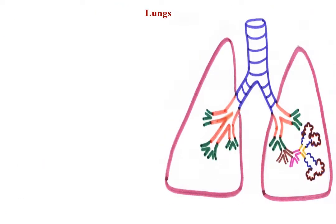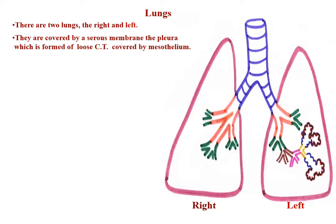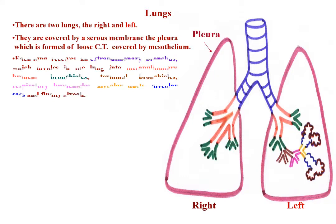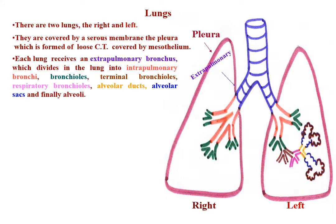The lungs are the principal respiratory organs. There are two lungs, the right and left. They are covered by a serous membrane called the pleura, which is formed of loose connective tissue covered by mesothelium. Each lung receives an extrapulmonary bronchus, which divides in the lung into intrapulmonary bronchi, bronchioles, terminal bronchioles, respiratory bronchioles, alveolar ducts, alveolar sacs, and finally alveoli.